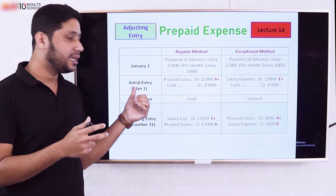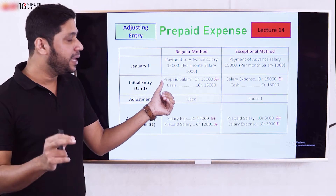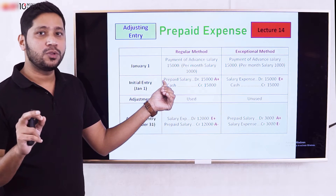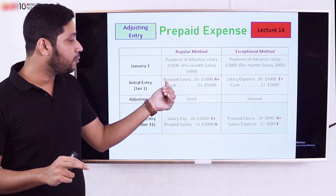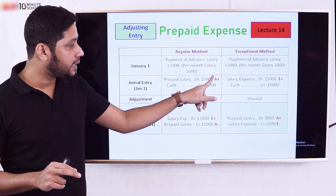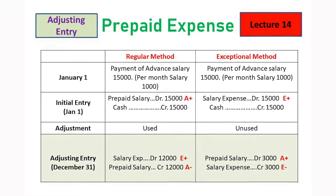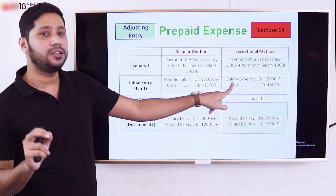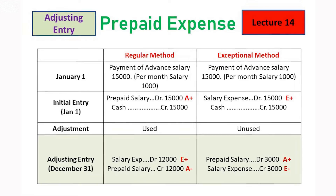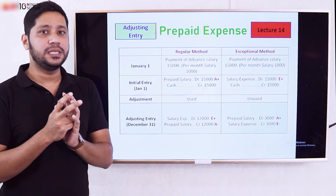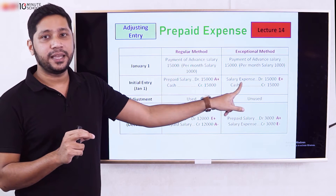For the initial entry in the general journal, since we paid advance salary, we record Prepaid Salary debit and Cash credit. Alternatively, if recorded as expense initially, we record Salary Expense debit and Cash credit. It depends on how you record the initial entry.